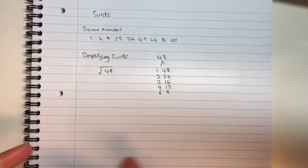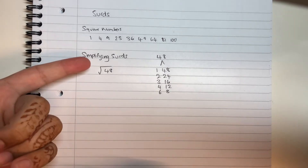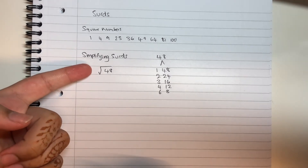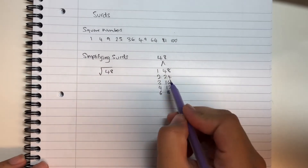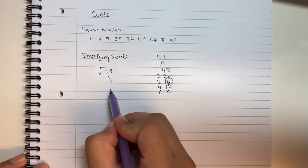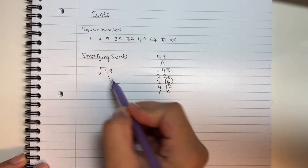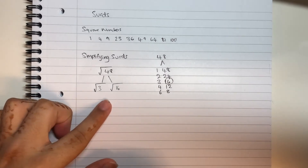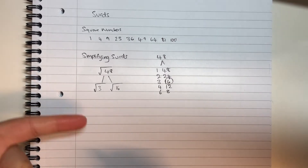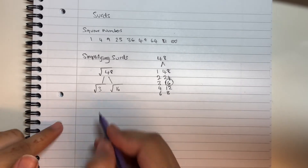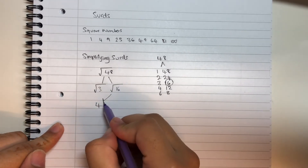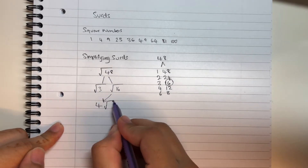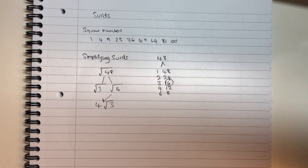Now we need to do the exact same thing but with square numbers. You need to find the biggest square number that's a factor of 48. The biggest square number is 16. So 48 divided by 16 gives us 3, meaning the factors of root 48 will be root 3 and root 16. Since 16 is a square number, root 16 simplifies to 4. Root 3 can't simplify, so the answer is 4 root 3 — the 4 is placed next to root 3 because it's being multiplied.